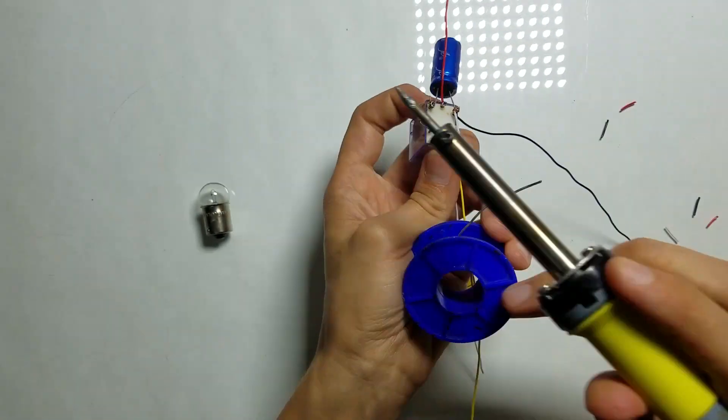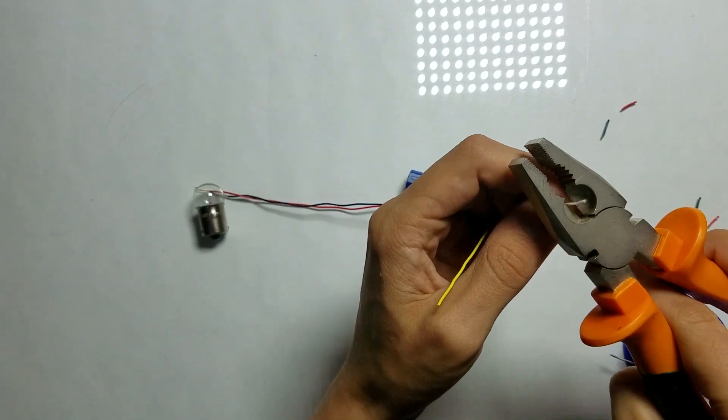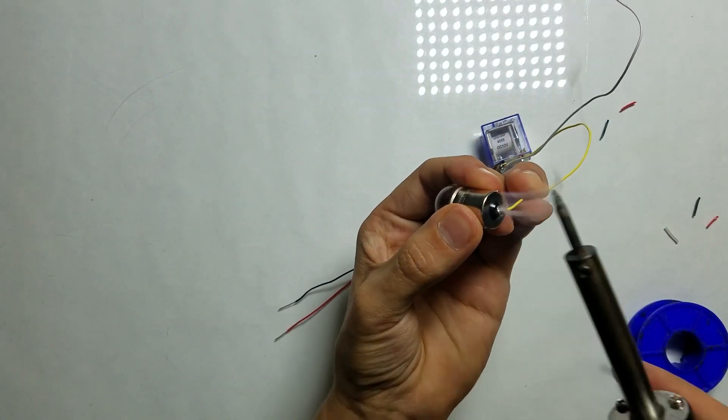Now let's solder everything together. Now let's strip the white and yellow wire from the other side, and let's solder them to the light bulb.